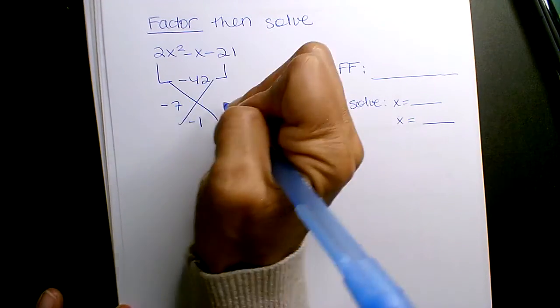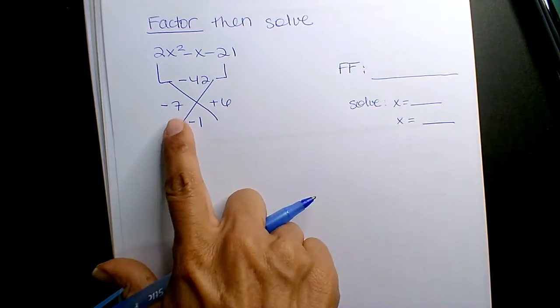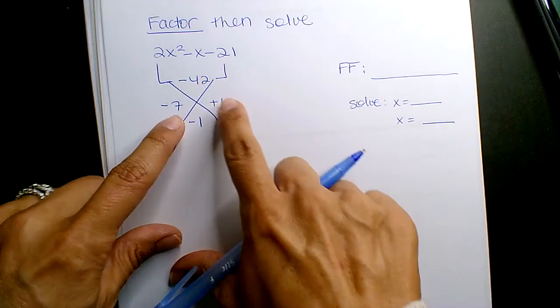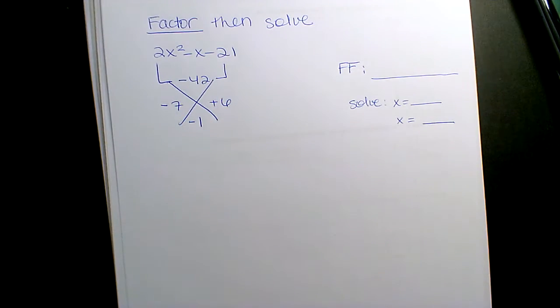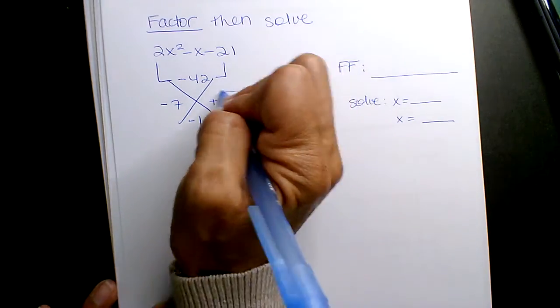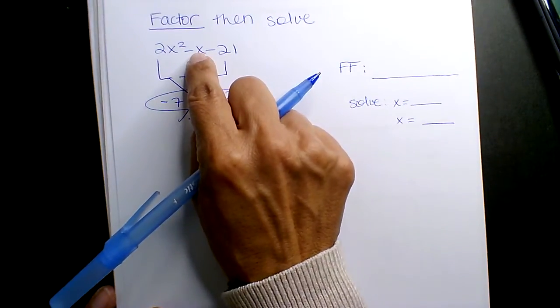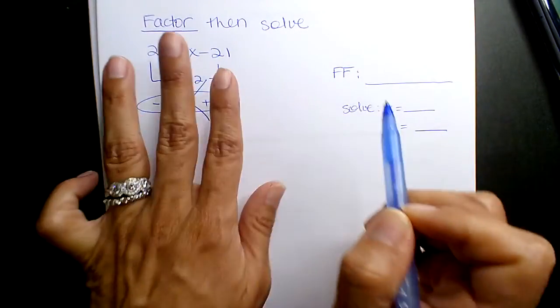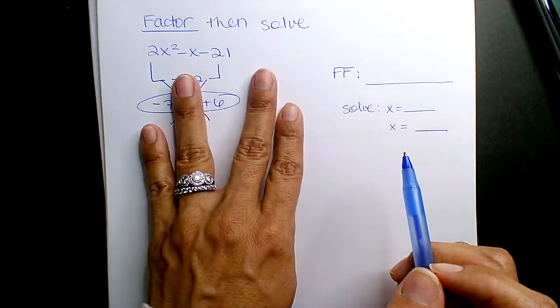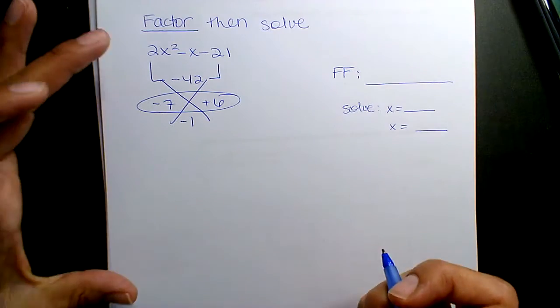Is that okay? Because negative times a positive gives me a negative. 6 and 7 make 42. Negative 7, positive 6, negative 1, right? Okay, these two are going to replace your B values. So your three terms, 1, 2, 3, three terms are going to become four and then you're going to split in GCF, okay?